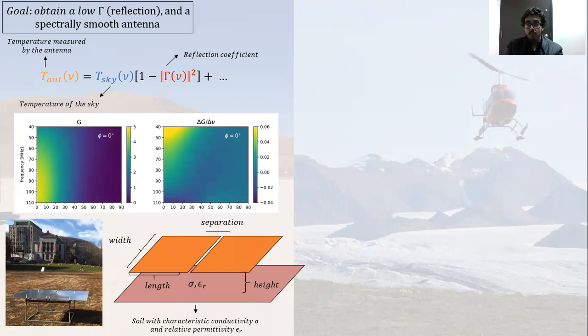Now in terms of spectral smoothness, this is important because of chromaticities that can mimic the 21 centimeter global signal. So this is why we need to take that into consideration while optimizing our antennas.